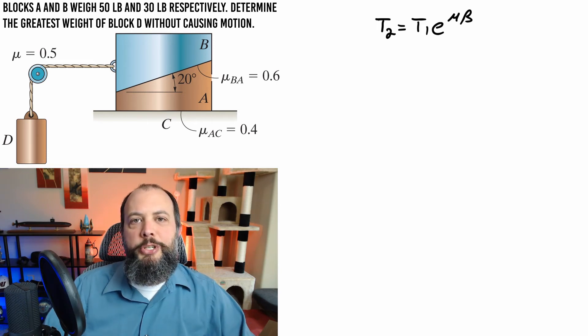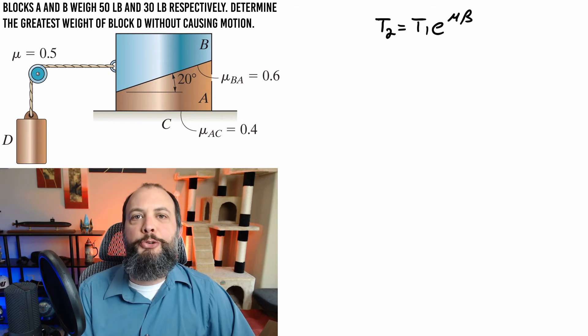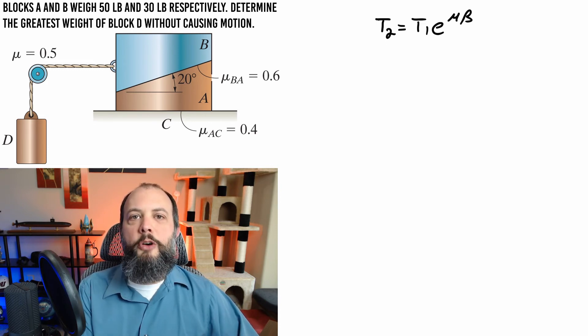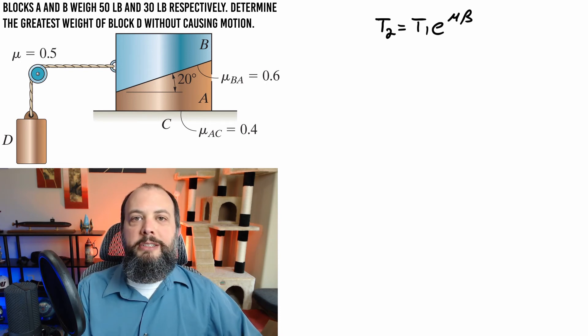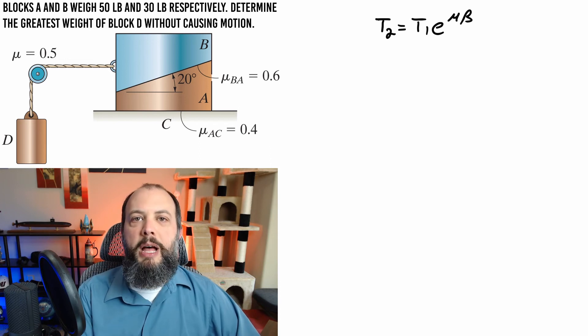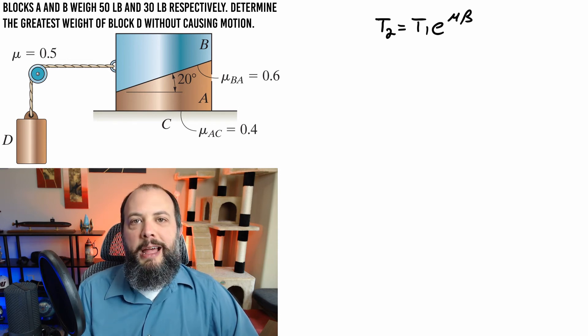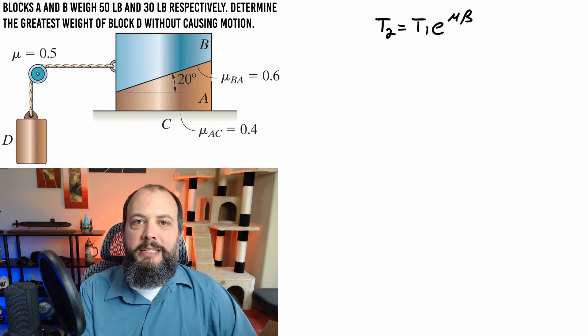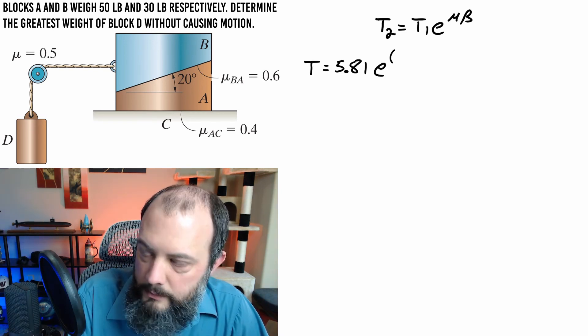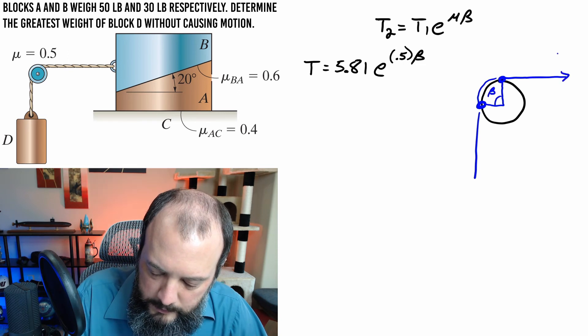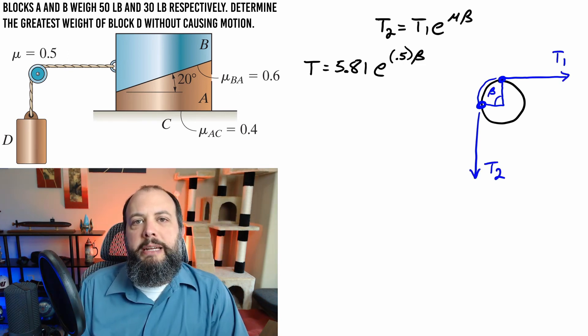I wrote down the friction equation here and the most common mistake students make with this is using the wrong tension on the wrong side of this equation. In this equation it does matter which one is which and in particular if you envision this as being a tug of war t2 is the side that's winning, whichever force is larger goes on the side by itself as t2. For this problem the weight force is actually going to be larger than 5.8 so the 5.8 will be on the right hand side and the weight on the left hand side.